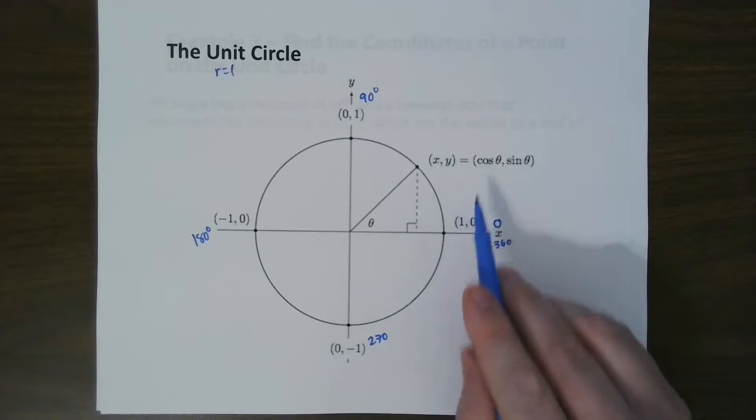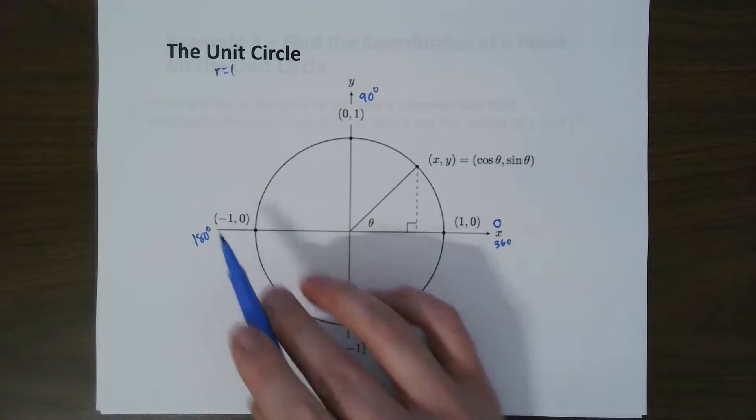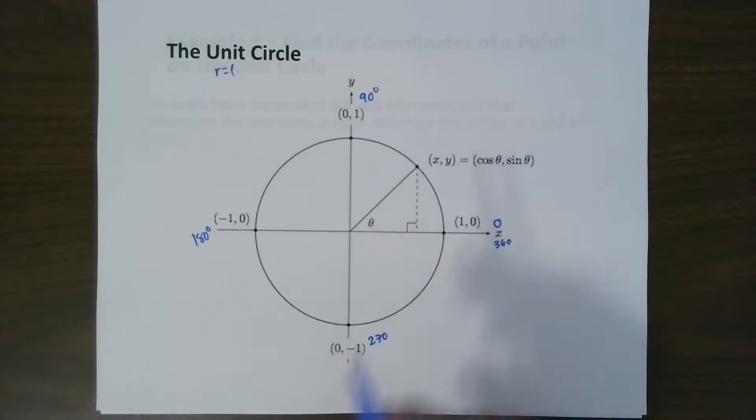So, for example, cosine of 0 is 1, sine of 0 is 0. And you can do that with each one of these. So the x components are always cosine, and the y components are sine.